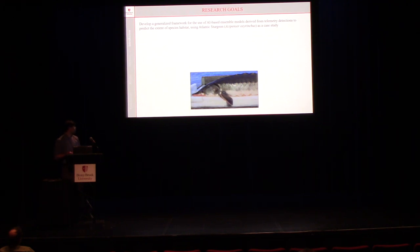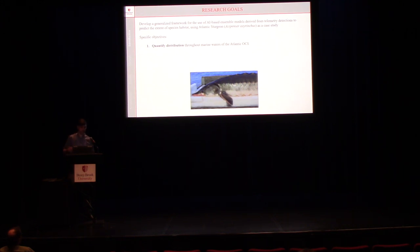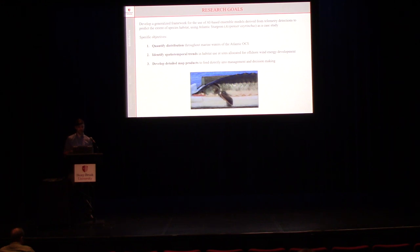With all that in mind, the overall research goal is to show a generalized framework using AI-based ensemble models derived from telemetry detections to predict the extent of species habitat — using Atlantic Sturgeon as a case study. The objectives — broad or specific — are to quantify distribution of these fish throughout marine waters, identify spatiotemporal trends, and develop detailed map products, which will be very important for management.